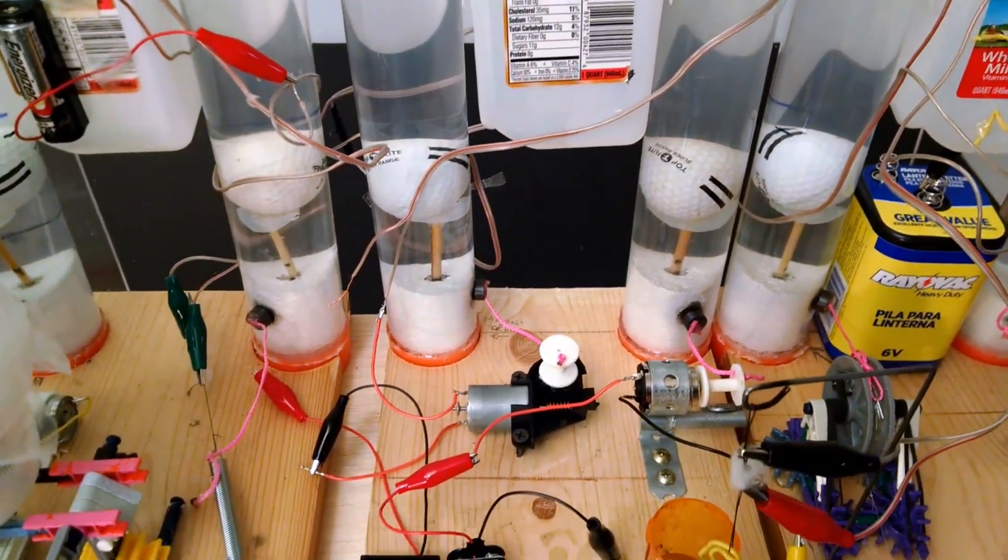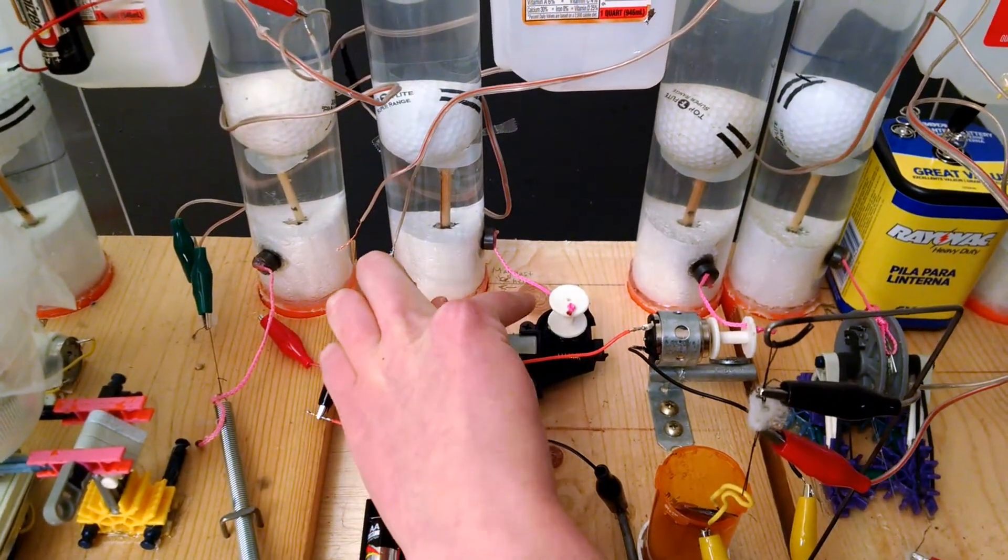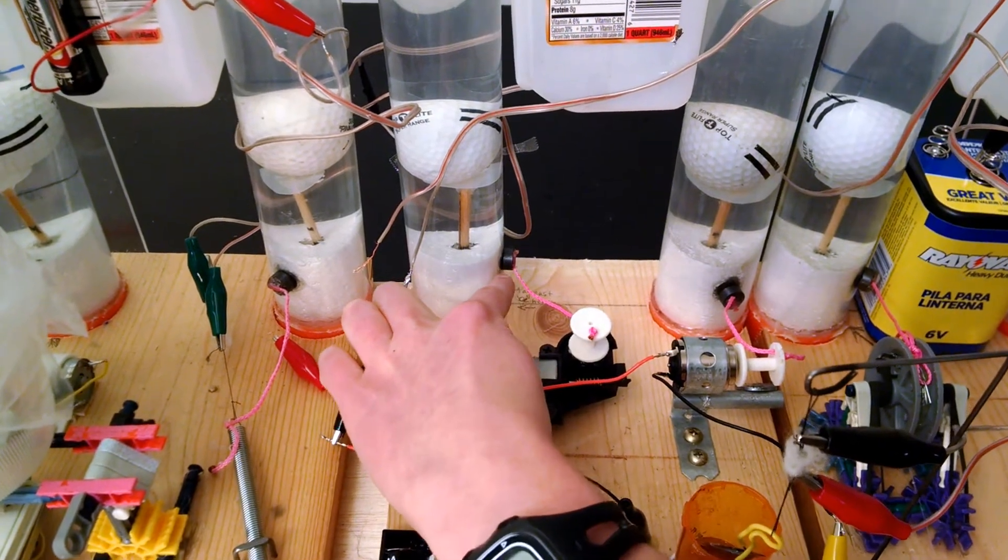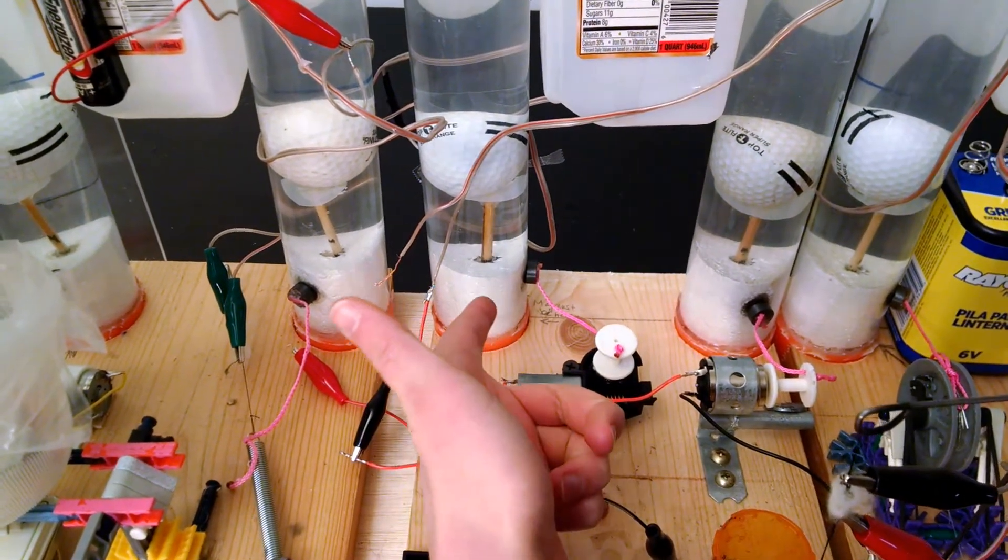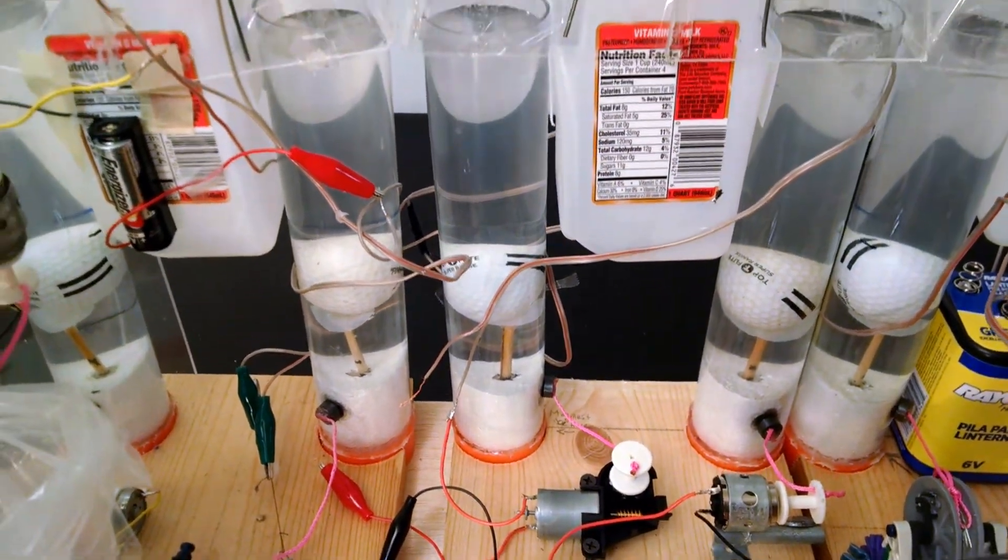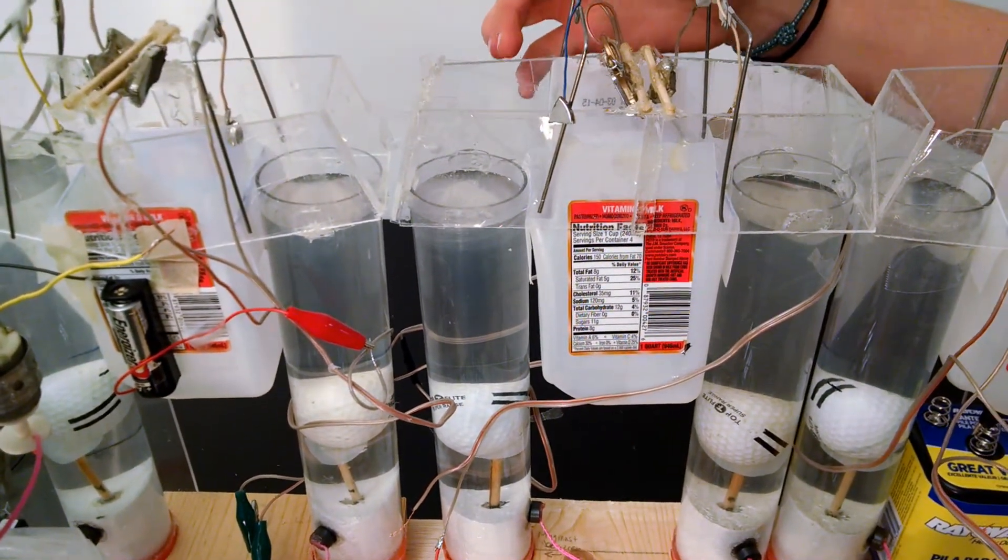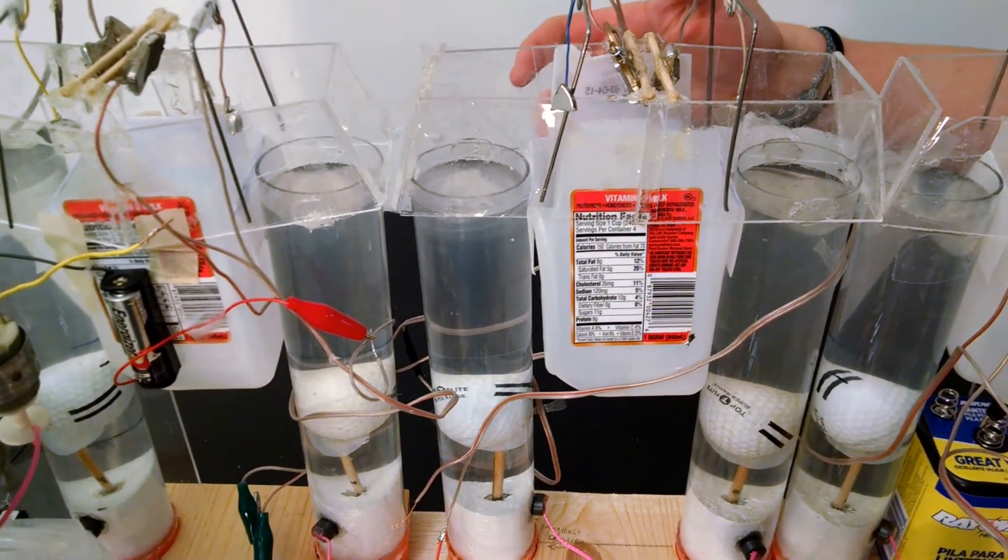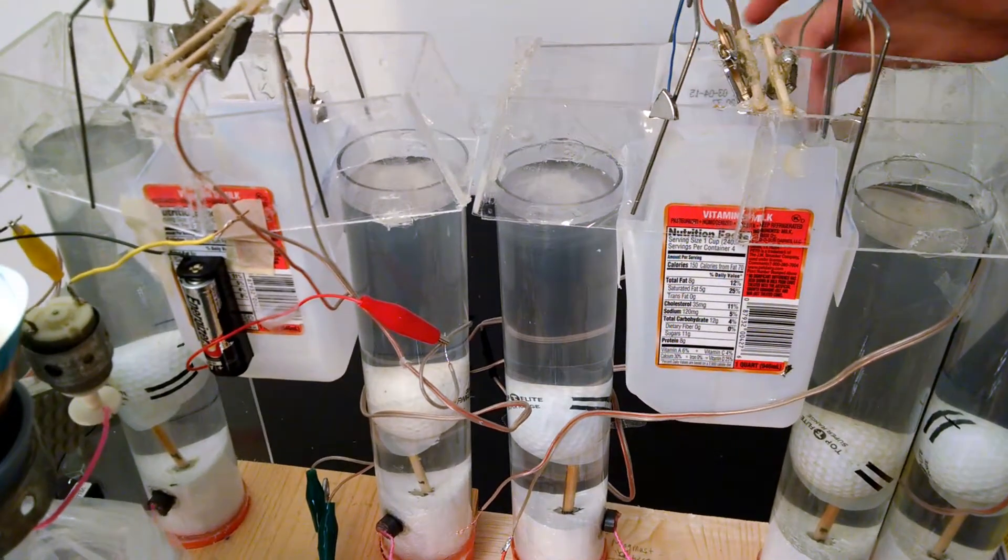which will turn on this motor pulling this magnet away from this float letting the float rise up and the golf ball will trigger another magnetic switch as it falls down into the scoring jug.